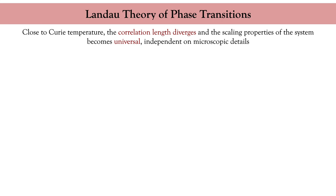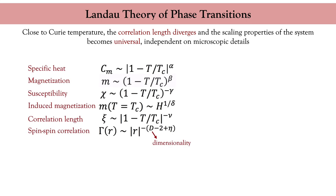This critical scaling of the various magnetic properties of a system is described by these formulas. The exponents alpha, beta, gamma, and delta are called critical exponents and are all related to each other via renormalization group theory.